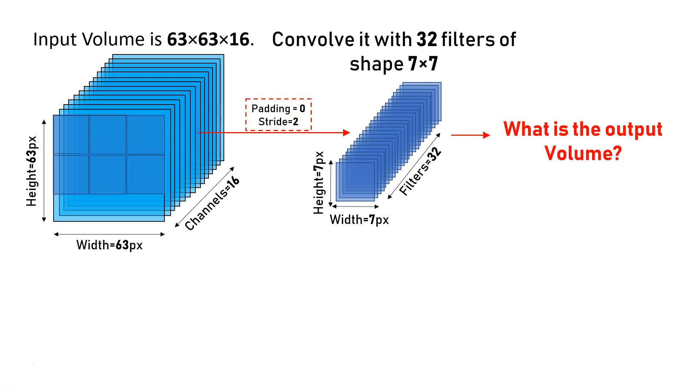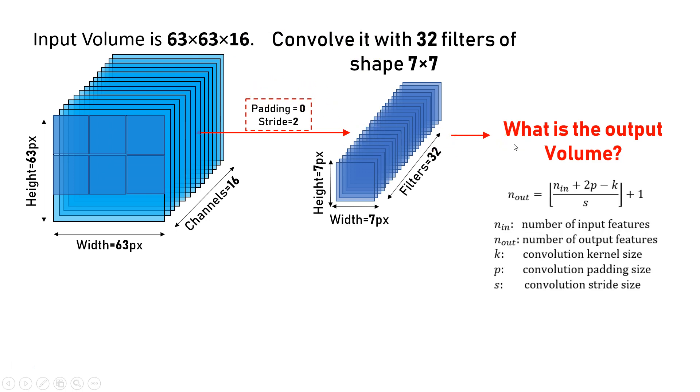The question is, what is the output form? What is the dimension of the next layer if you have this input and this filter that will make a convolution together? For this, we have a formula.